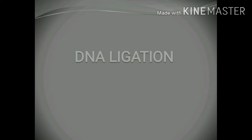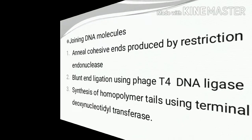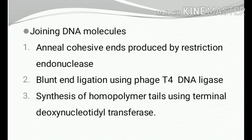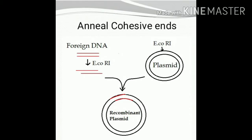In this video we will see what is DNA ligation. Joining DNA molecules is called ligation. There are three ways of joining DNA molecules: one is annealing the cohesive ends produced by restriction endonuclease, the second method is blunt-end ligation using T4 DNA ligase, and the third method is synthesis of homopolymer tails using terminal deoxynucleotidyl transferase. The foreign DNA and the plasmid DNA are cut with a restriction enzyme that produces staggered ends, mixed together, and the nick is sealed by DNA ligase.